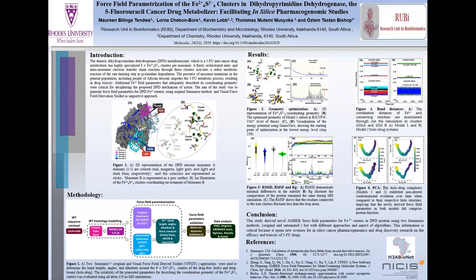Further validation using root mean square deviation and radius of gyration showed that the stability and compactness of the protein was maintained in both the hollow and drug-bound systems of each model. More interestingly, the residues connected to the ion center showed least fluctuation, which means that the derived parameters were good, whereas the loop regions of the protein showed higher fluctuations.